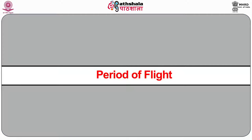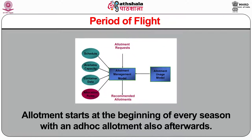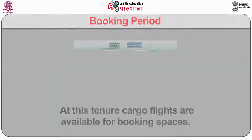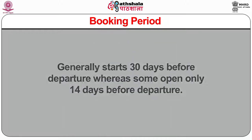Revenue management planning is done on two bases. First, the period of flight as decided by the airline — allotment starts at the beginning of every season with ad-hoc allotment also afterwards. Second, the booking period during which cargo flights are available for booking spaces, generally starting 30 days before departure, while some open only 14 days before departure. A large amount of cargo bookings occur within 2 to 5 days before departure. Network and capacity management is done during the booking period.